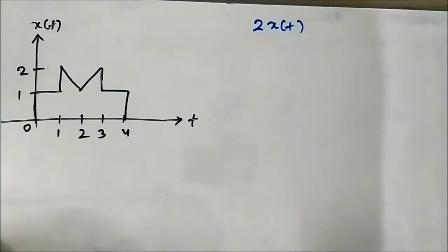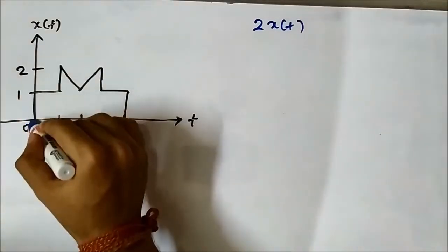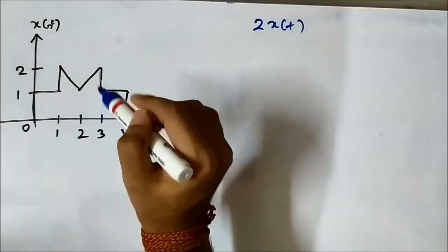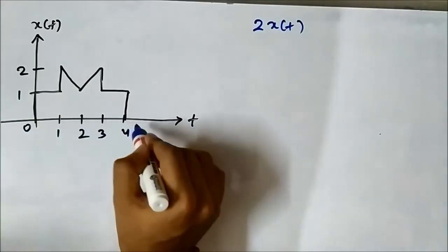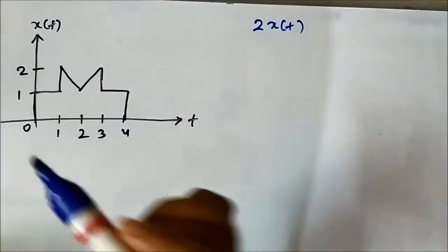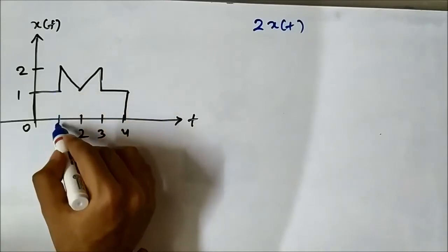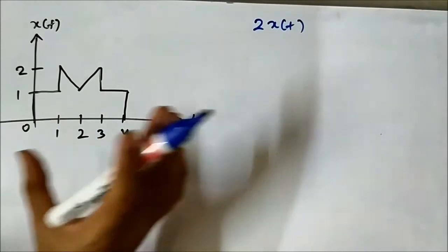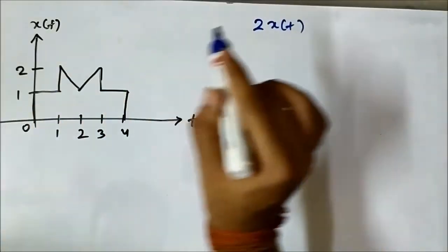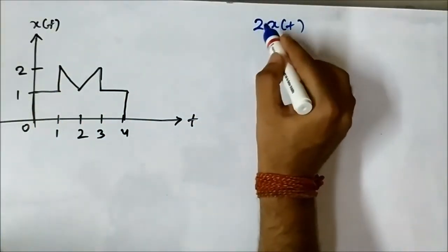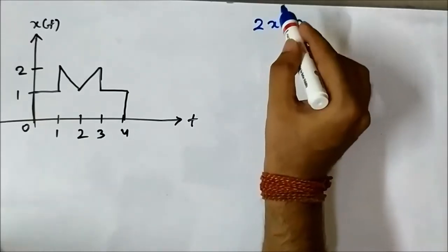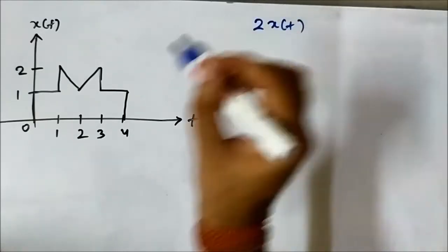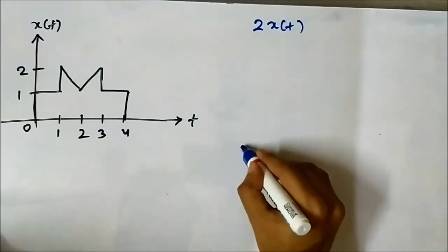To perform amplitude scaling, you have to pay attention to the amplitude of the signal at different instants of time. For example, you have to identify what is the amplitude of the signal at distinct points 1, 2, 3, 4, and so on. Depending on that, you multiply it by the scaling factor. Here the scaling factor is 2.